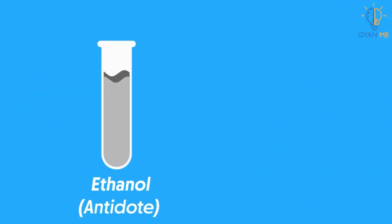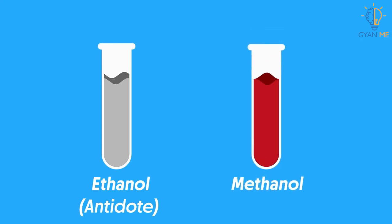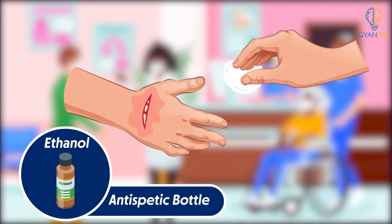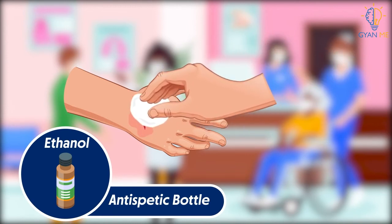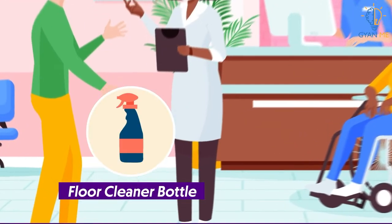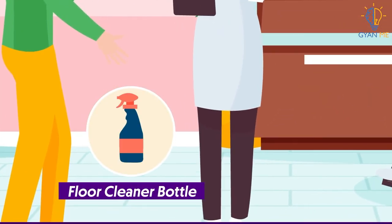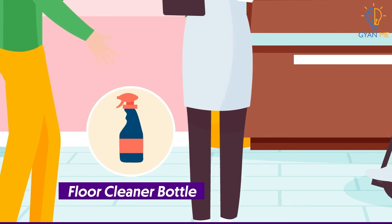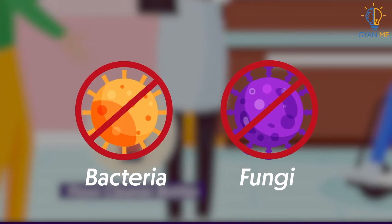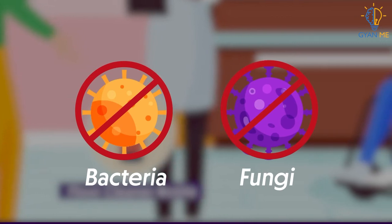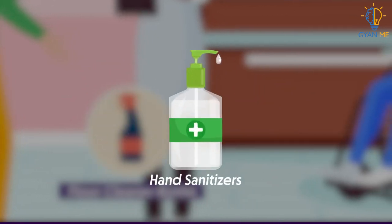Ethanol is also used as an antidote against many other harmful and poisonous alcohols such as methanol. Because of its amazing antiseptic properties, ethanol is used in hospitals for dressings and to clean surfaces in hospitals and houses. It kills microorganisms like bacteria, fungi, etc., and is also used in manufacturing of many hand sanitizers.